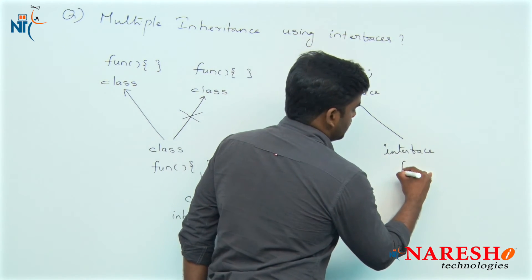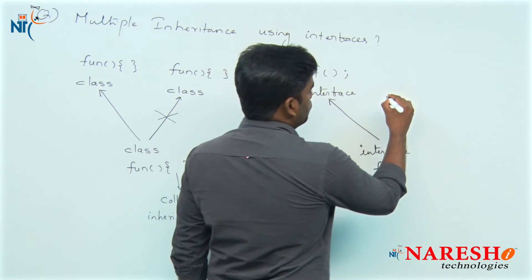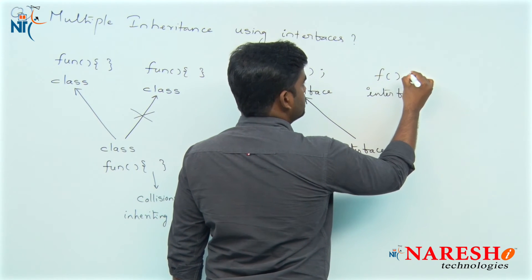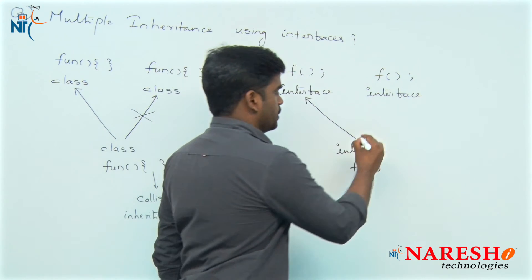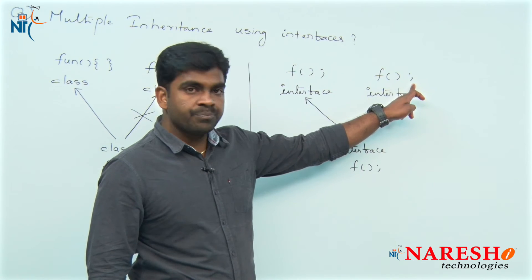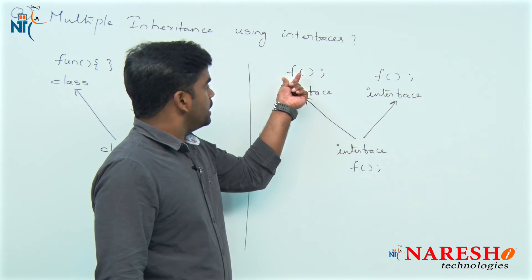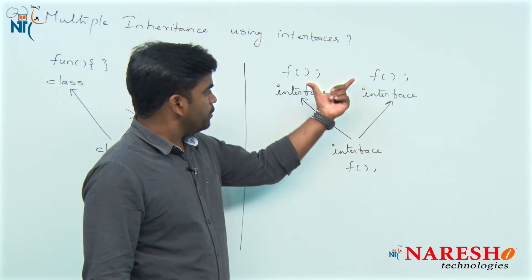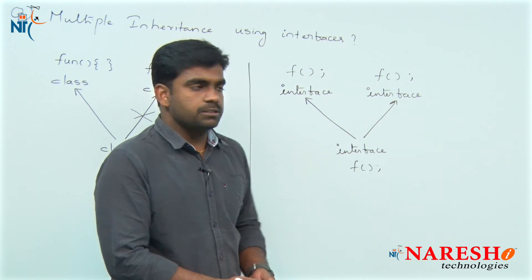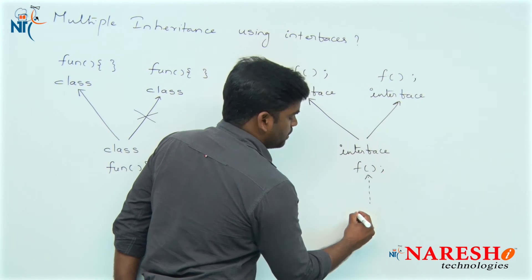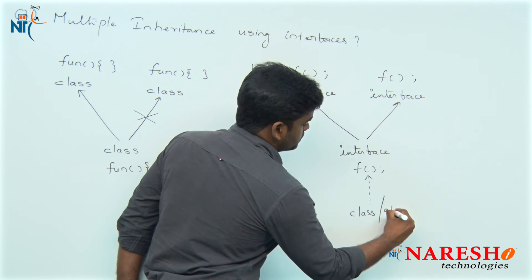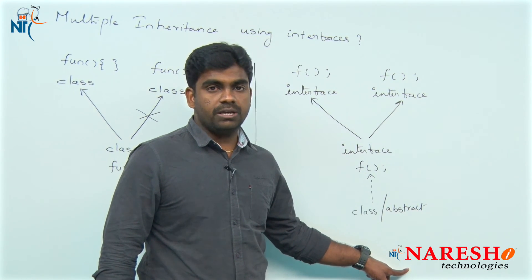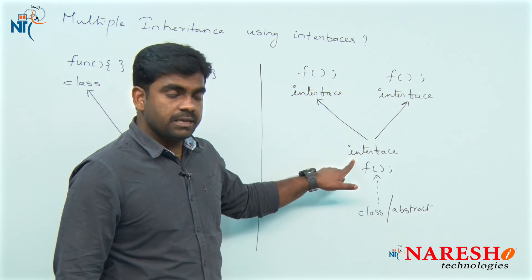Suppose there is one more interface, and if it has the same specification — no problem, because there is no logic here and there is no logic there, and the name of the specification is the same. So no problem — only one specification will come. Then who will implement it? Maybe some other person will implement this interface — either a class or an abstract class — whoever will implement it.